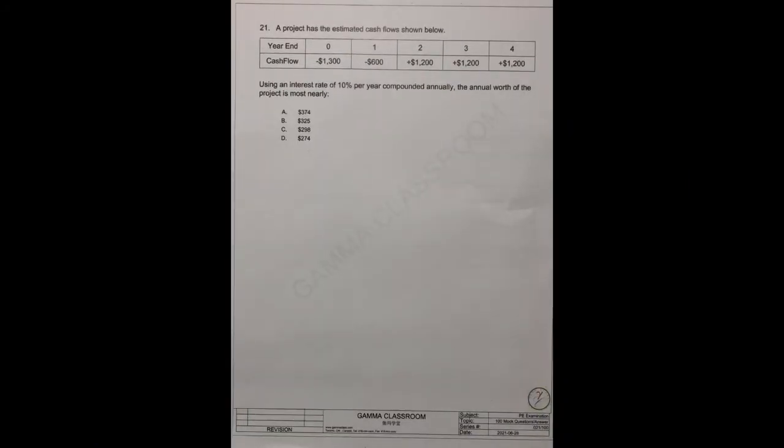Question 21: A project has the estimated cash flows shown below. Year-end cash flow, year zero is minus $1,300. One year later is minus $600. Two years later is positive $1,200. Three years later is $1,200 positive. Four years later is another $1,200 positive.